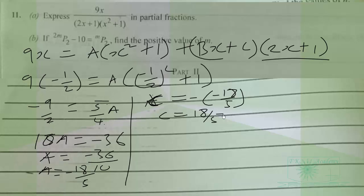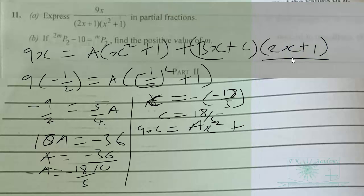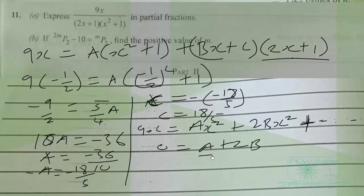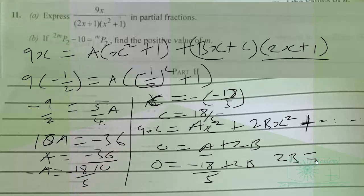We can also expand the equation. Expanding 9x = A(x² + 1) + (Bx + C)(2x + 1) gives 9x = Ax² + A + 2Bx² + Bx + 2Cx + C. Comparing coefficients of x², we get 0 = A + 2B. Since A = −18/5, we have 2B = 18/5, so B = 9/5.